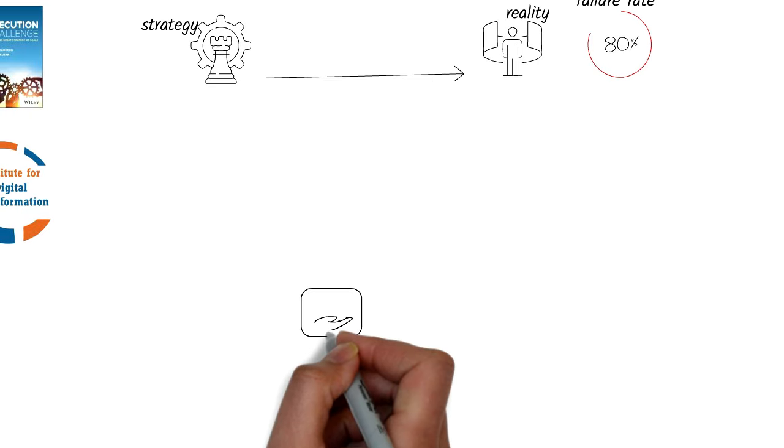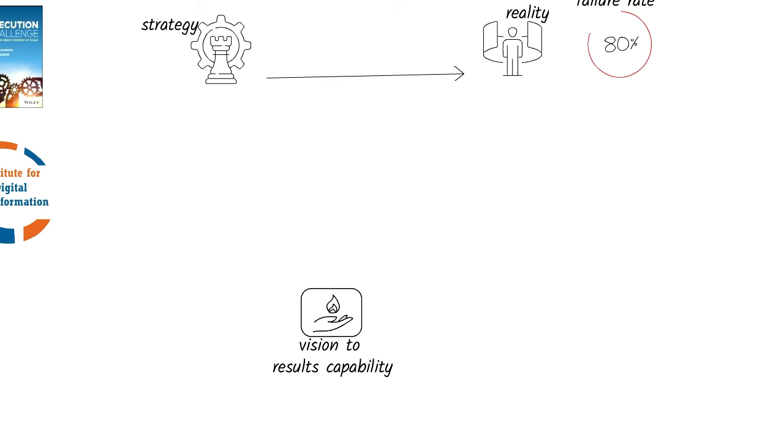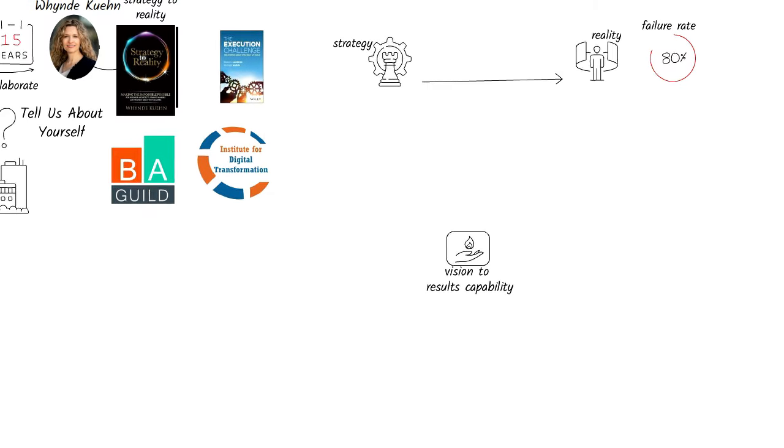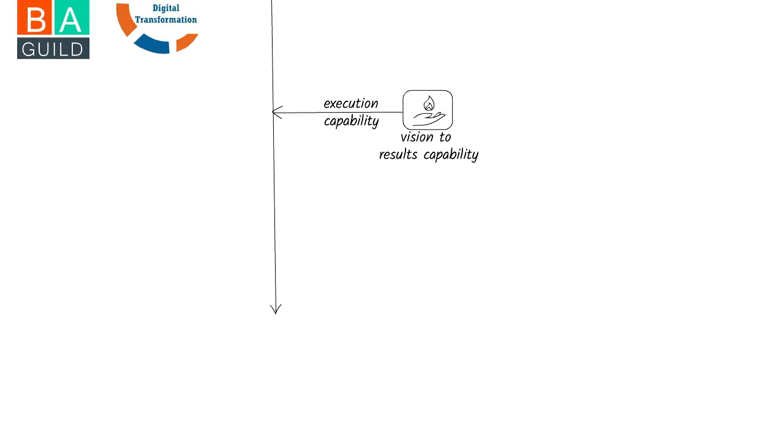First, imagine your organization possessing a magic power, a power that could transform your strategic vision into concrete results. But this isn't just wishful thinking. It is a critical business capability that is as vital as any other function within an organization. This capability enables an organization to translate grand ideas into impactful execution at the speed of business and coordinated across organizational structures, products, and geographies.